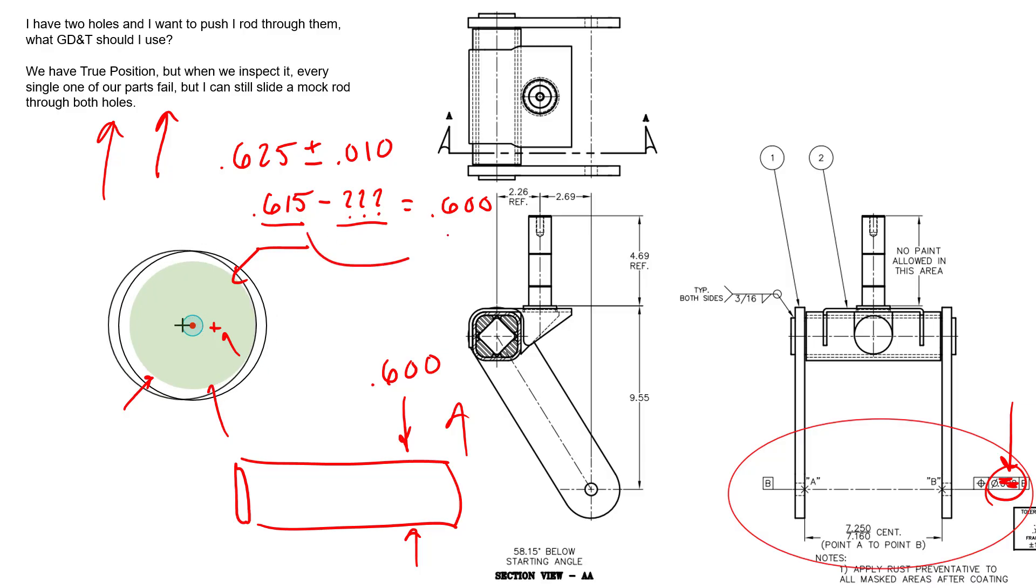So, the difference between this value and this value is simply 0.015. So, if the scenario is our MMC of our clearance hole is 0.615 from our size dimensions, and we know that the worst case MMC of our shaft is 600, we can calculate the actual position tolerance needed for a zero clearance fit in the worst case scenario.